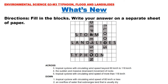Across: Number 3 — a tropical cyclone with circulating wind speed beyond 60 to 118 km per hour is called a storm. Number 4 — the sudden and massive downward movement of rocks is called a landslide. Number 5 — a tropical cyclone with circulating wind speed of more than 118 km per hour is called a typhoon. Down: Number 1 — a tropical cyclone with circulating wind speed of 60 km per hour or less is called a depression. Number 2 — an overflow of water that submerges land that is usually dry is called a flood.